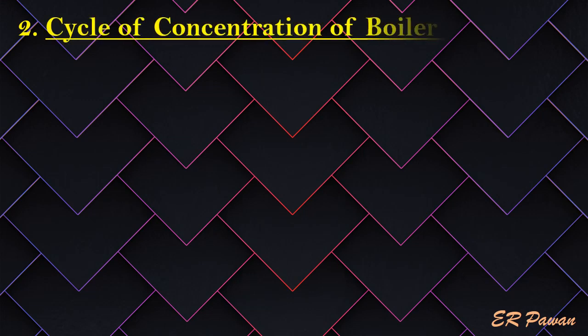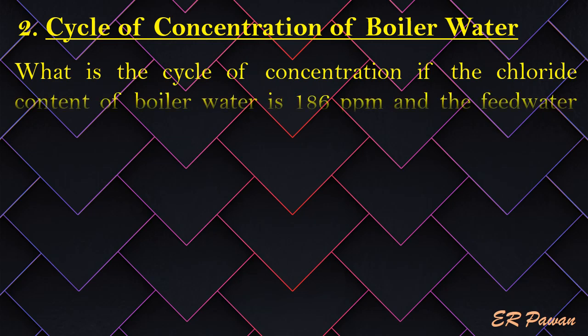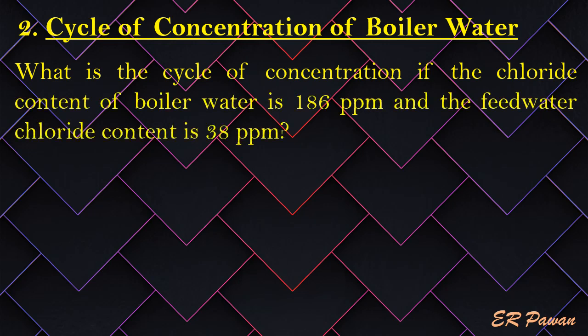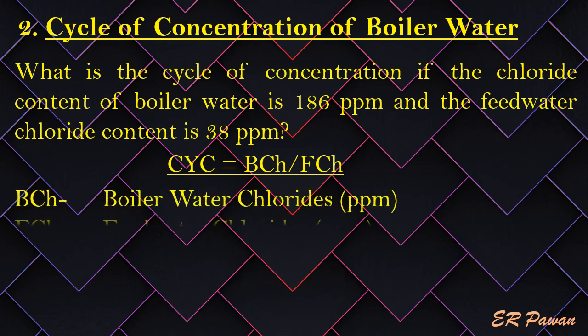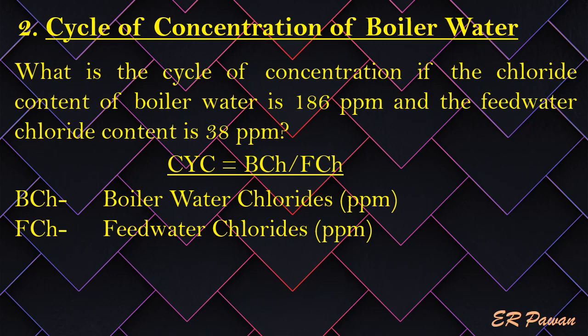Formula 2 — Cycle of Concentration of Boiler Water. What is the cycle of concentration if the chloride content of boiler water is 186 parts per million and the feed water chloride content is 38 parts per million? CYC equals BCH divided by FCH. Where CYC = cycles of concentration, BCH = boiler water chlorides (ppm), FCH = feed water chlorides (ppm). Let's put the value in the formula.